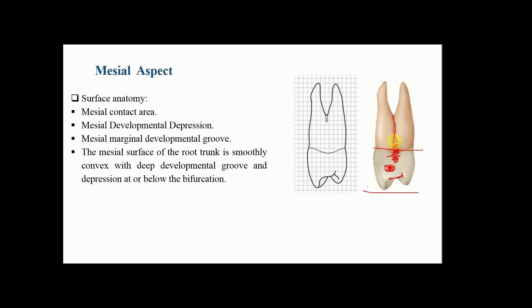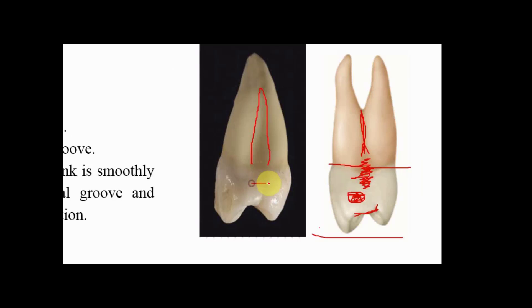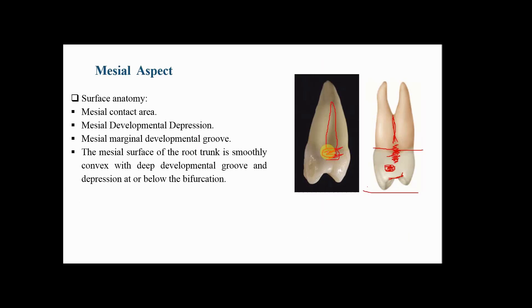The root trunk is smoothly convex with a developmental groove and depression leading to the bifurcation area. In the case of a single-rooted tooth, this mesial developmental depression is noticeable along most of the root length.